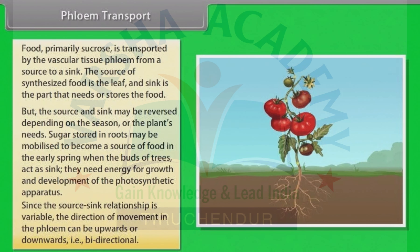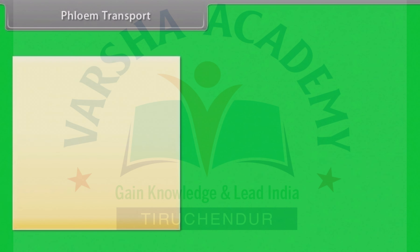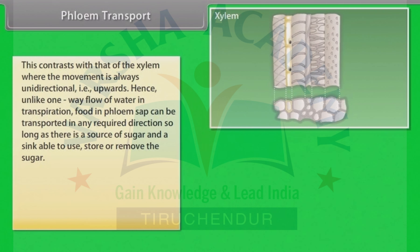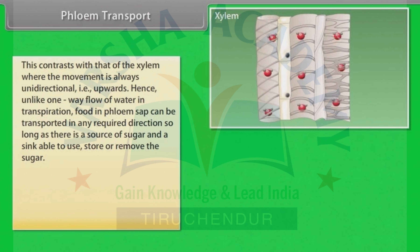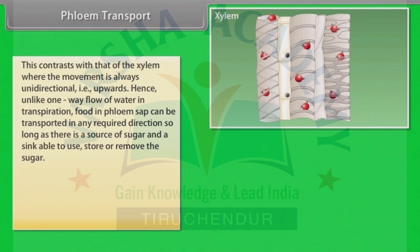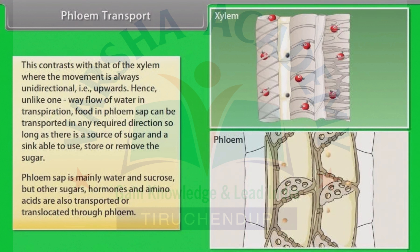Since the source-sink relationship is variable, the direction of movement in the phloem can be upwards or downwards, which means bidirectional. This contrasts with the xylem, where the movement is always unidirectional, which means upwards. Hence, unlike the one-way flow of water in transpiration, food and phloem sap can be transported in any required direction, so long as there is a source of sugar and a sink able to use, store or remove the sugar. Phloem sap is mainly water and sucrose, but other sugars, hormones and amino acids are also transported or translocated through phloem.